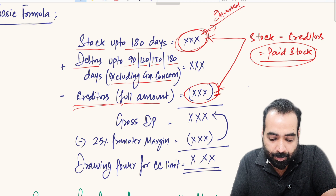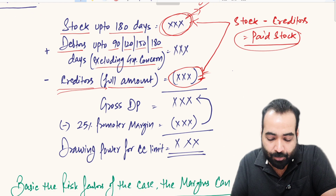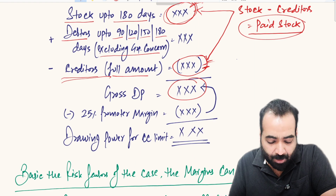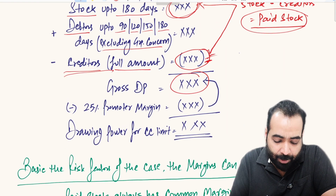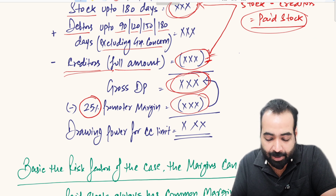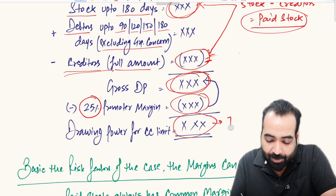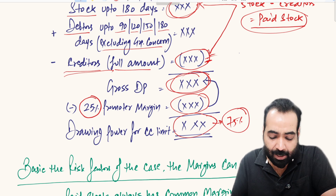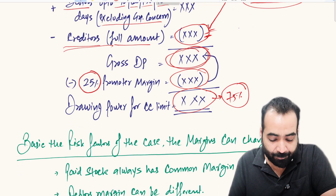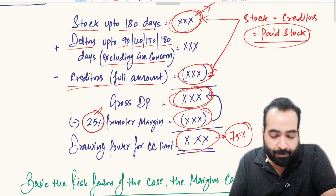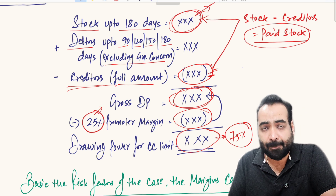If you do stock plus debtors minus creditors, you arrive at gross drawing power or gross investments. You then deduct 25 percent promoter margin from that amount, and the balance — which represents 75 percent of the amount — is your drawing power.